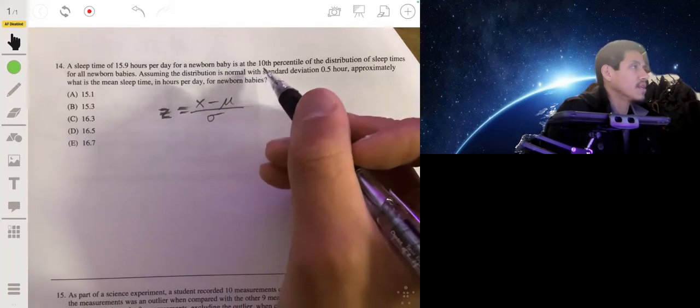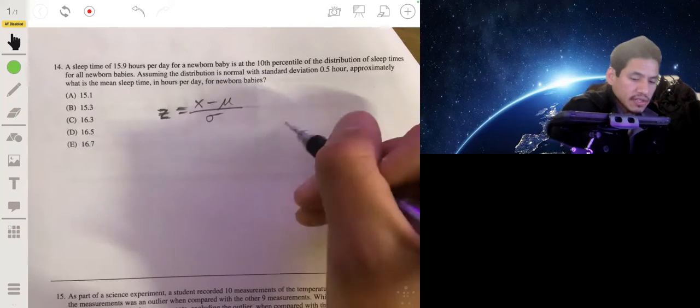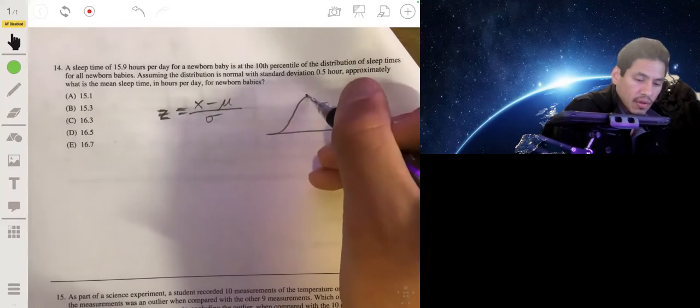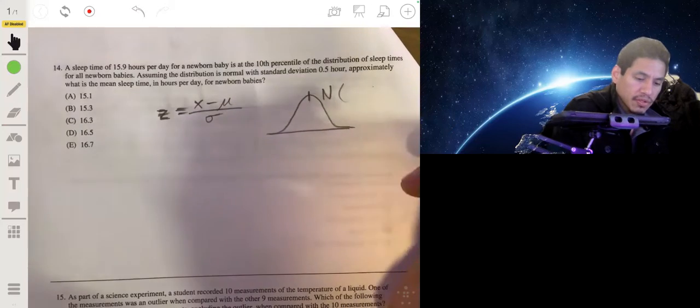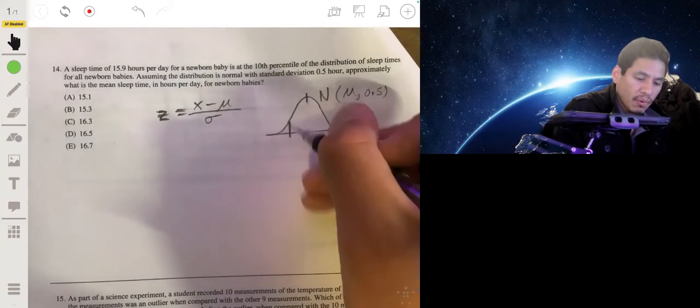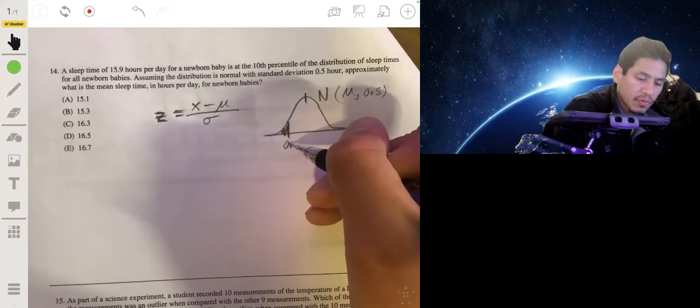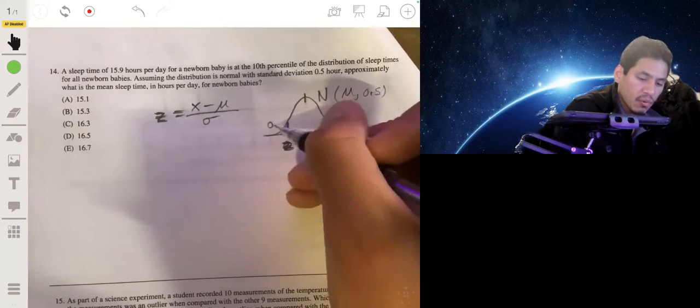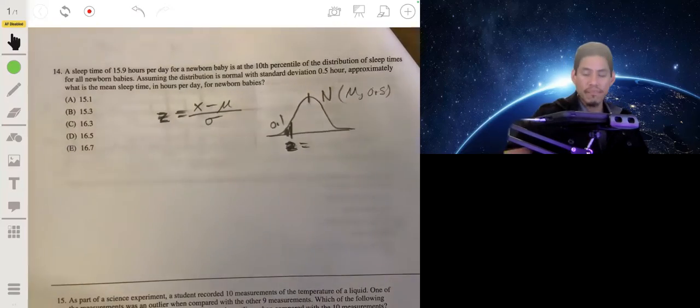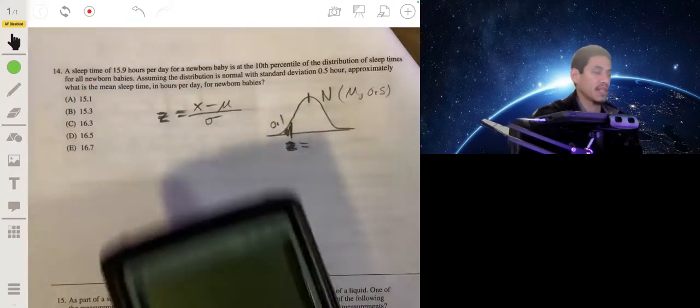And in this case, we want to find the z value, the standardized value of a normal distribution. We don't know the mean. We know standard deviation is 0.5, but with 0.1, sorry, 0.1 area to the left. So we want to find a corresponding z value, that's what it means to be a 10 percentile.